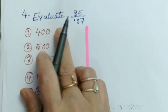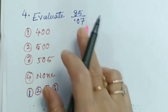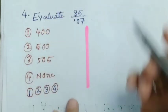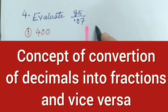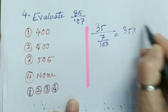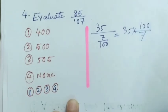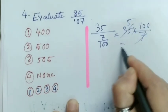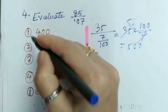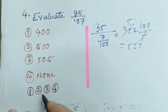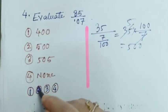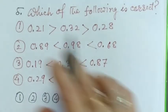Question number 4: Evaluate 35 by 0.07, and four options are given. This one is pretty simple. I'm just simplifying it. 35/0.07 equals 35/(7/100), equals 35 times 100 divided by 7. This is going to be 500. So option 2 is the answer.